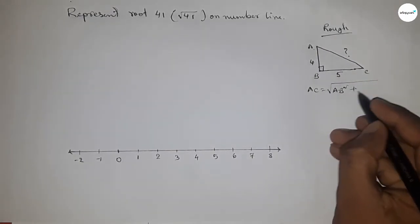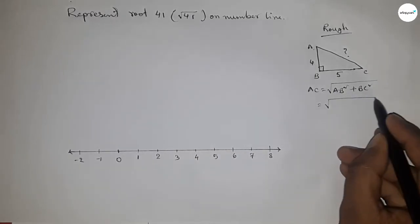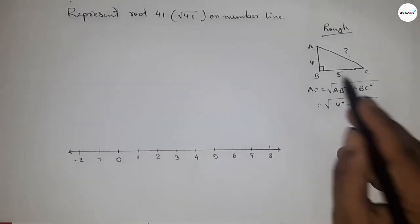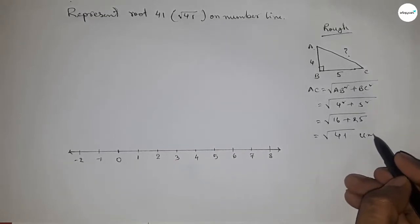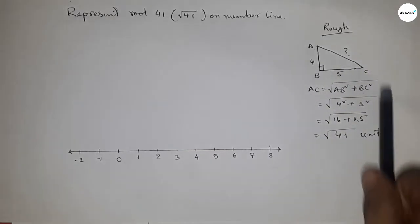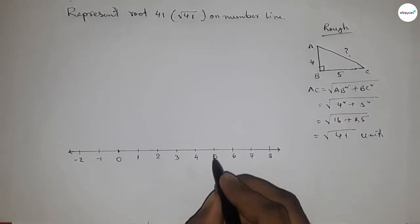Hypotenuse equals root over height squared plus base squared. So this is 4 squared plus 5 squared, which is 16 plus 25, which equals 41. So root 41 units. We'll apply this concept here between points O and A.